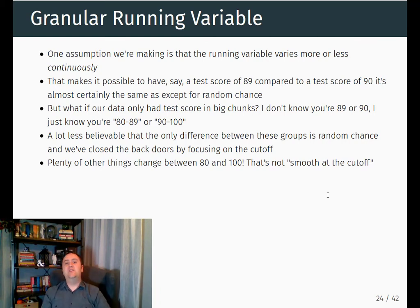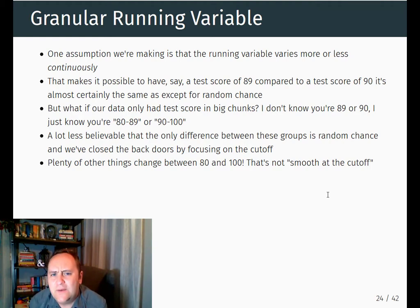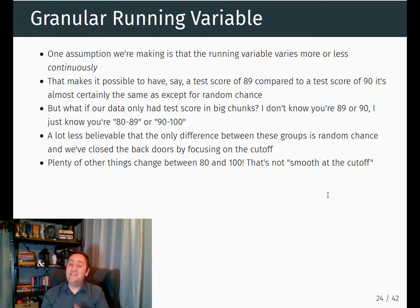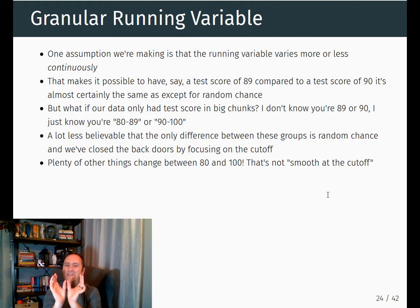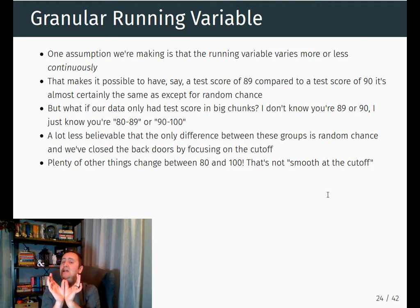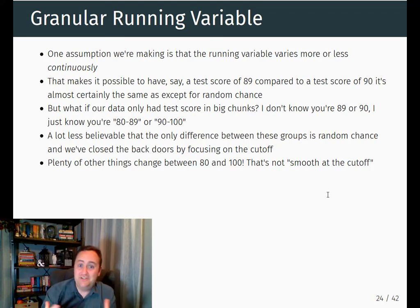Next: granular running variables. The whole idea of regression discontinuity is we have a running variable, a cutoff, and we compare people just on either side. They're basically the same person — but what if instead of a continuously changing running variable, we have something very granular? If our running variable was not a test score but something like how many years of education you've had — 11 years, 12 years, 13 years, 14 years — that's a pretty big jump. Can we really say that people with 12 years and 13 years of education are basically the same, except they just happened to fall on one side of the line? Not really — those are very different things.